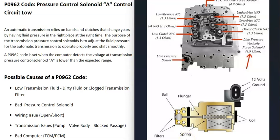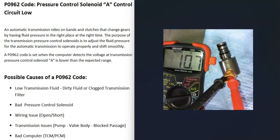There are different ways to test those solenoids. A very common method is to use a multimeter — look up what the rated ohms are supposed to be for that specific solenoid, since there will be differences. Check to see if the reading falls inside that range. If it doesn't fall inside the expected range, or if it reads open, then you know it's bad and needs to be replaced.